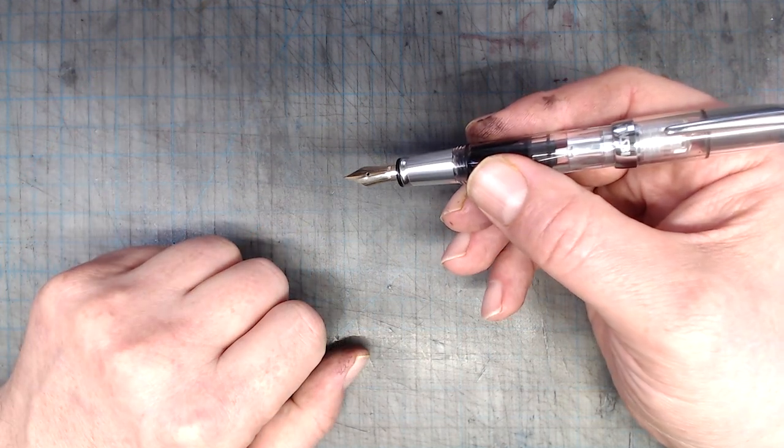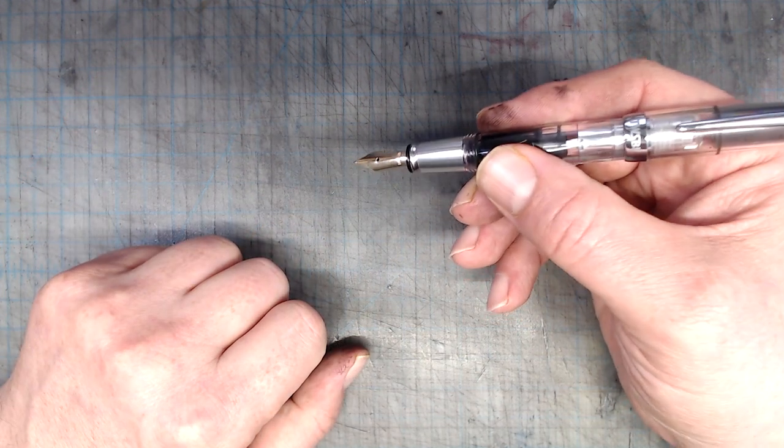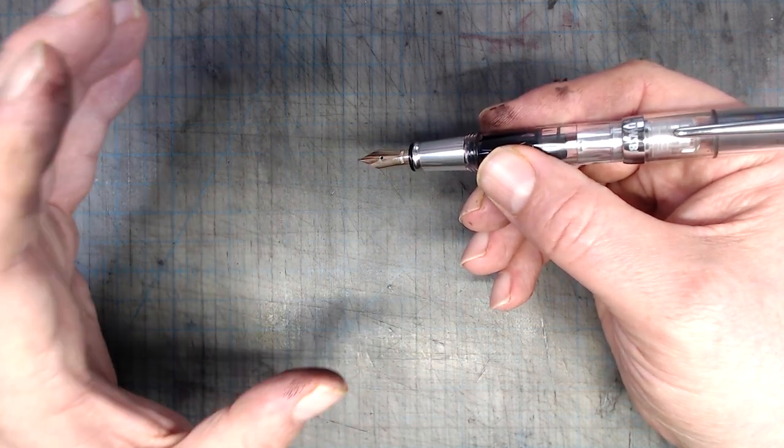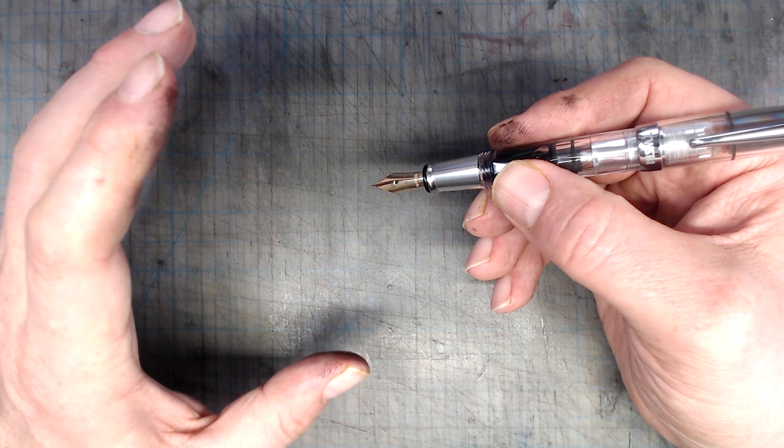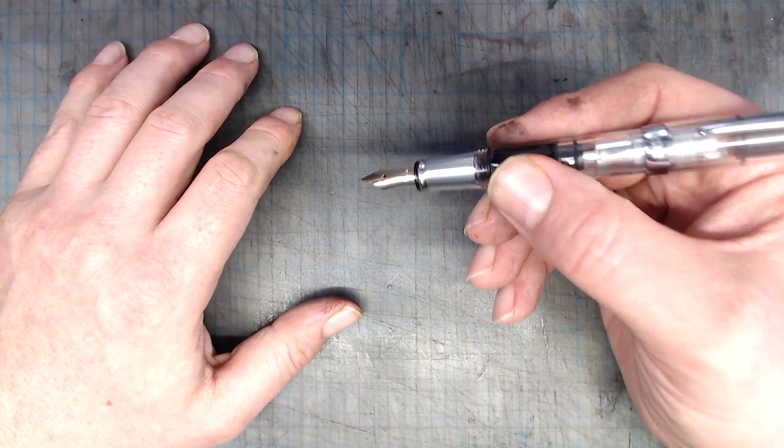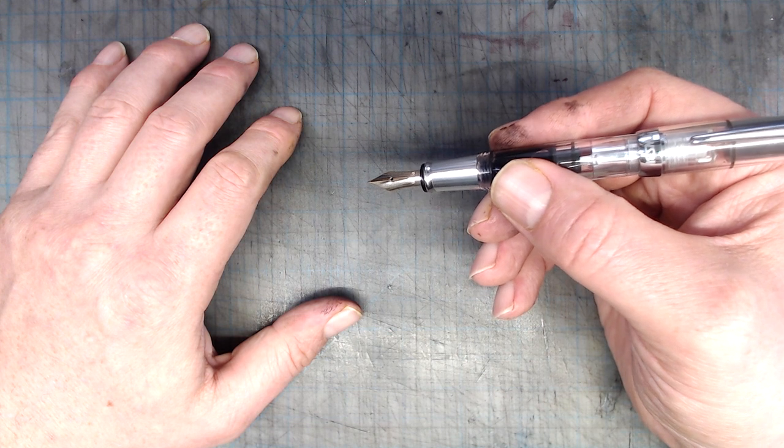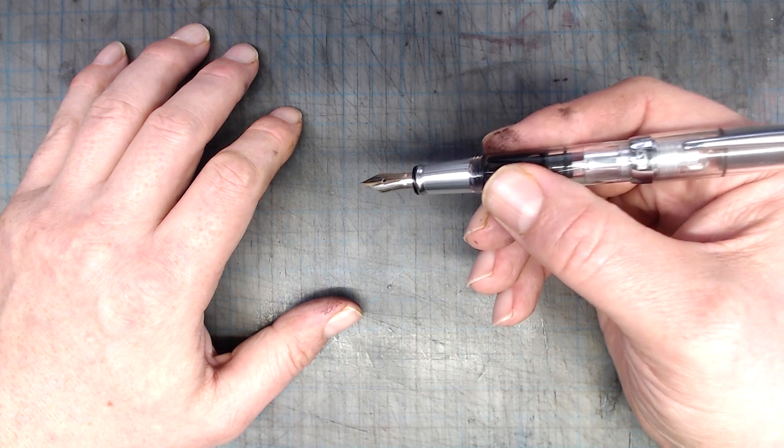This pen uses a Yovo number 4 size nib, which is very reliable. Unfortunately, this is also an unusual size, which prevents you from switching it out with other nib options. That said, in this pen I have a gold nib made by Yovo, which was given a semi-flex grind by Gino Salarino of the Custom Nib Lab. Here are the four tests using the original steel Yovo nib.